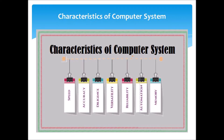In this lecture, we are going to discuss the characteristics of computer system. The characteristics of computer system are speed, accuracy, diligence, versatility, reliability, automation, and memory.